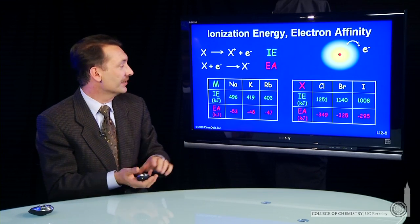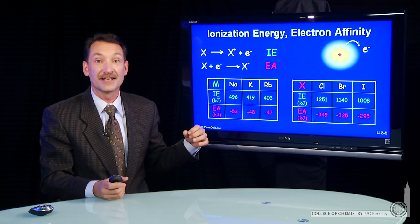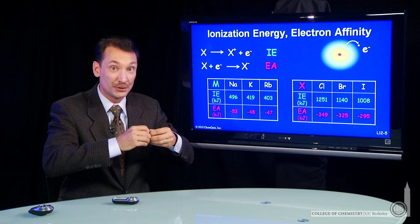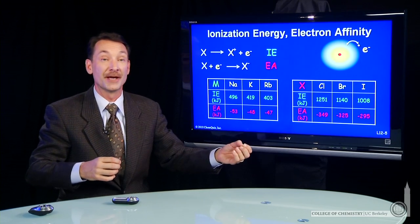So let's look at that. Here's the ionization energy for sodium, 496 kilojoules per mole. I have to put in 496 kilojoules per mole to pull a mole of electrons off a mole of sodium atoms.